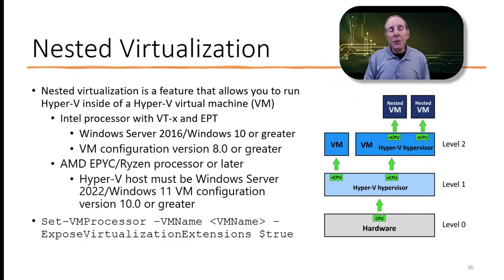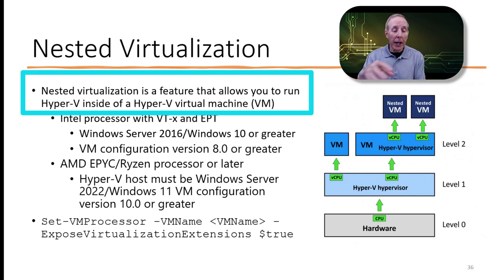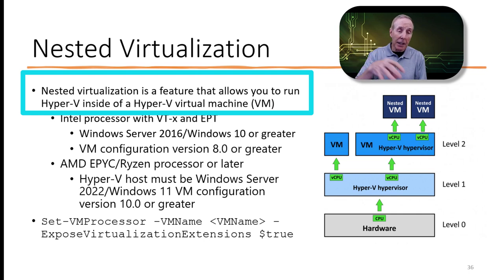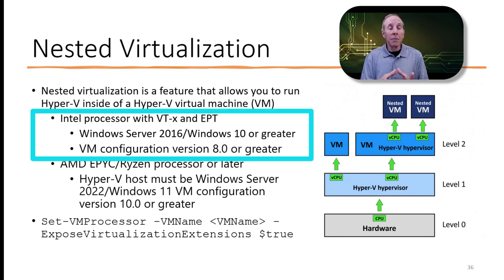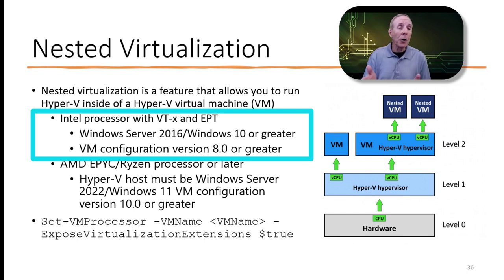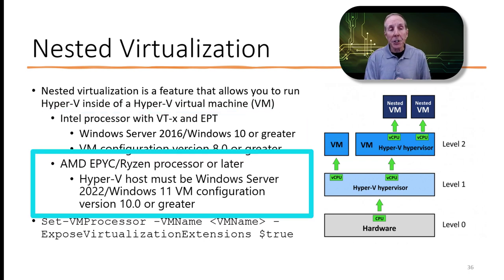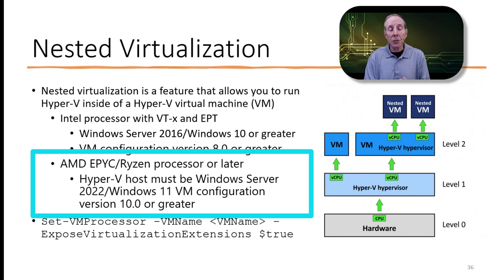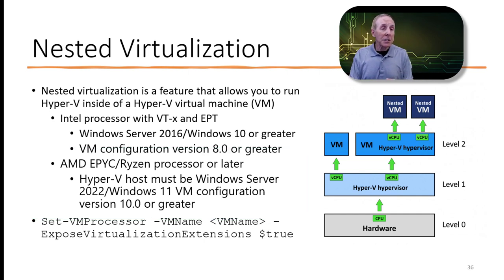So what is nested virtualization? It's running a Hyper-V operating system inside a Hyper-V operating system. Intel was ahead of AMD on nested virtualization out of the box — so if you had Server 2016 or Windows 10 and your VM configuration version was 8.0 or higher, it could do nested virtualization. AMD did catch up with their EPYC and Ryzen processors, and with Server 2022 and Windows 11 you can now do nested virtualization. I did test this with Oracle VirtualBox, a non-Microsoft product, and it worked great.